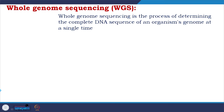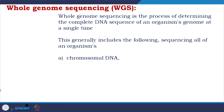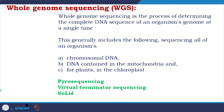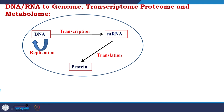In whole genome sequencing, the process determines the complete DNA sequence of an organism's genome at one time. This generally includes sequencing an organism's entire chromosomal DNA, the DNA content in the mitochondria, and if it is a plant, in the chloroplast as well. There are several methods like pyrosequencing, virtual terminator sequencing, and SOLiD, but rather than going into those details, I will come back to the central dogma.